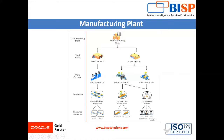We also define resource instances under the resource. Resource instances are representations of the resource in Oracle Fusion Manufacturing. One or more resource instances can be associated to a resource, and you can identify a resource instance by a unique identifier code and a name. You can also optionally assign a primary work center to the resource instance to identify the department location where that resource instance primarily works. In our upcoming session we will see how to create a manufacturing plant, work areas, work centers, resources, and resource instances in the application. Thanks for watching this video.